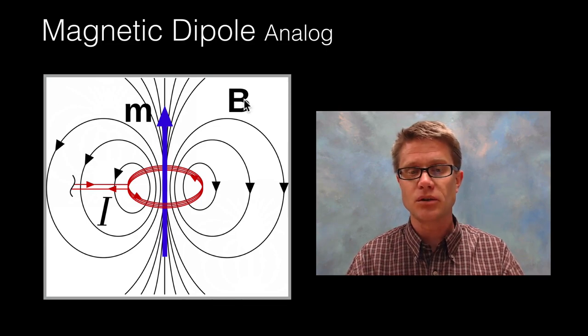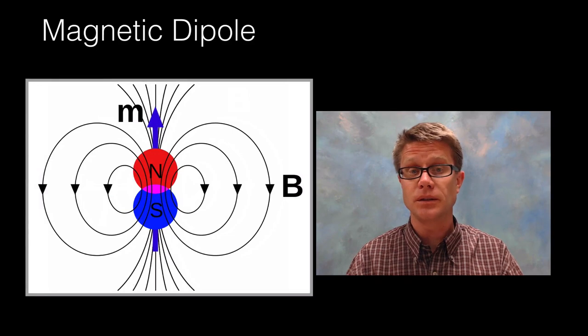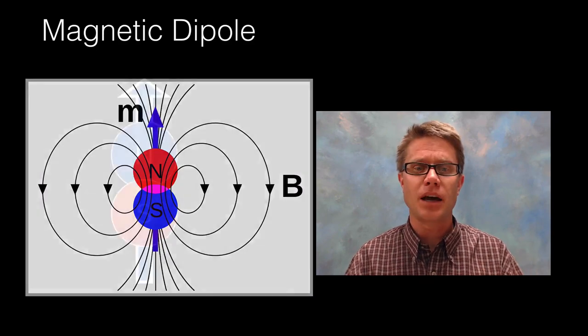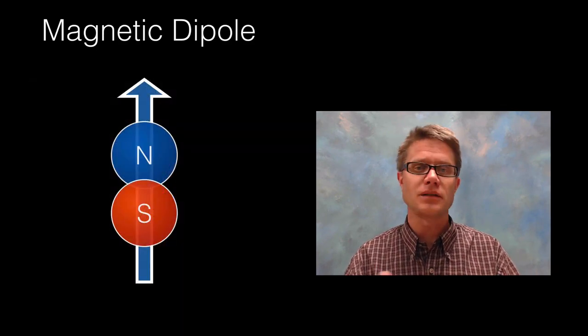That would be the M right here. And then this is going to be B which is going to be the magnetic field. And so it's exactly the same as a compass. It has a clear north and it has a clear south.